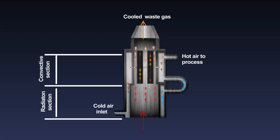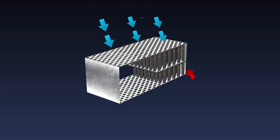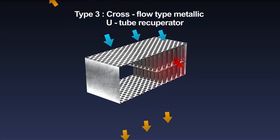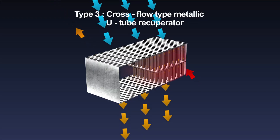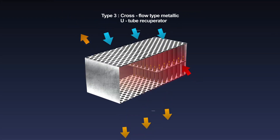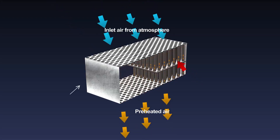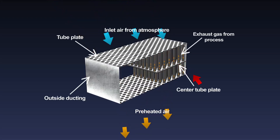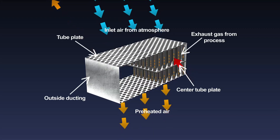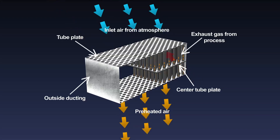The combined design uses a high temperature radiation recuperator followed by a convective design. This type is used in pulverized coal fired furnaces and can recover up to fifty percent of waste heat. The third and most efficient type is the cross-flow type metallic tube recuperator, which can recover up to eighty percent of waste heat. It is suitable for oil and gas fired furnaces and can also be used in pulverized coal fired furnaces with certain design modifications.